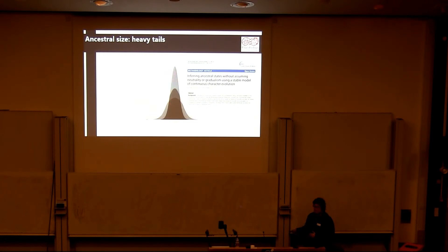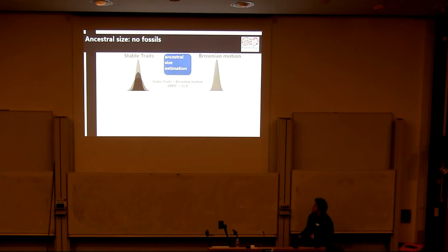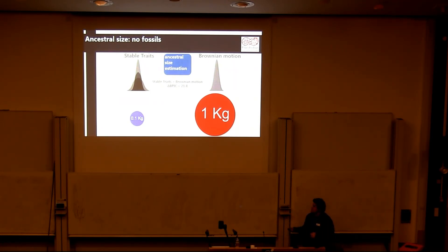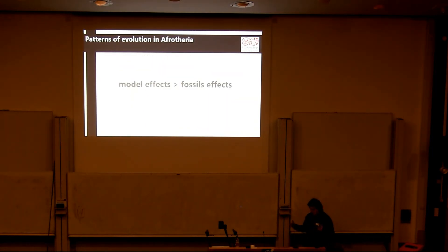We implemented this in a model known as stable traits, published recently, which incorporates heavier tails to allow rate volatility throughout the tree, making it more biologically realistic. What we find is that this model, which takes into account rate variation throughout the tree, actually fits better than the traditional Brownian motion model. For the analysis without fossils, there's a tenfold difference in the estimate of ancestral size — a much smaller, possibly more biologically realistic estimate. When we incorporate fossils, there is absolutely no change, and we get identical results. So the major theme is that model effects are much more important than fossil effects when looking at rate variation and ancestral size estimation.